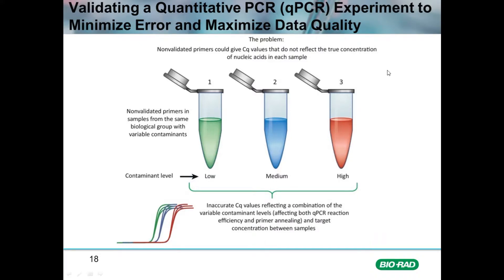The problem associated with working with non-validated primers in new samples is that the primers may not reflect the true concentration of the nucleic acids in each sample. This is particularly the case when extracting RNA and converting to cDNA, where it would be uncertain if the level of protein and chemical contaminants residual from the RNA extraction could vary between individual biological replicates.